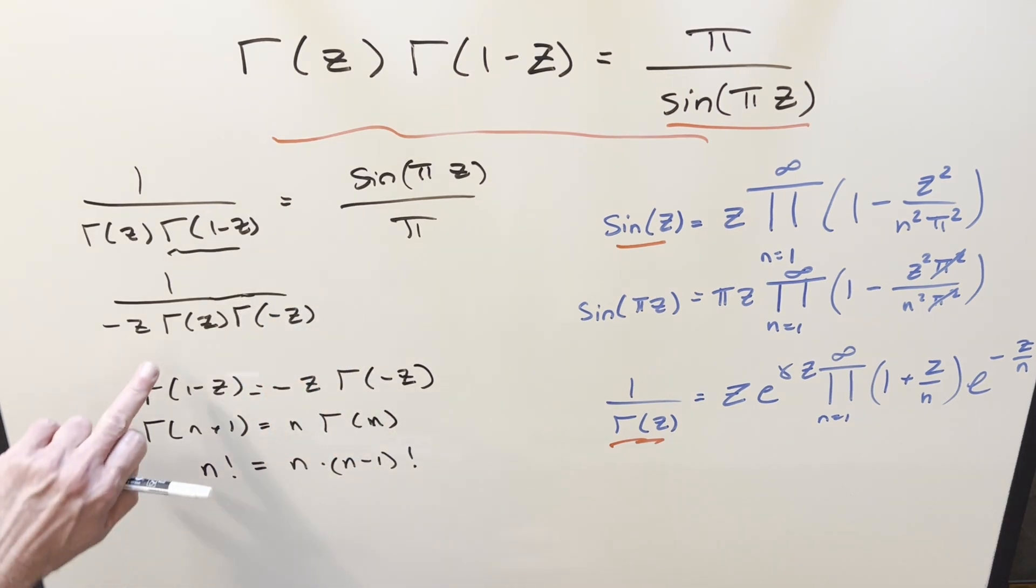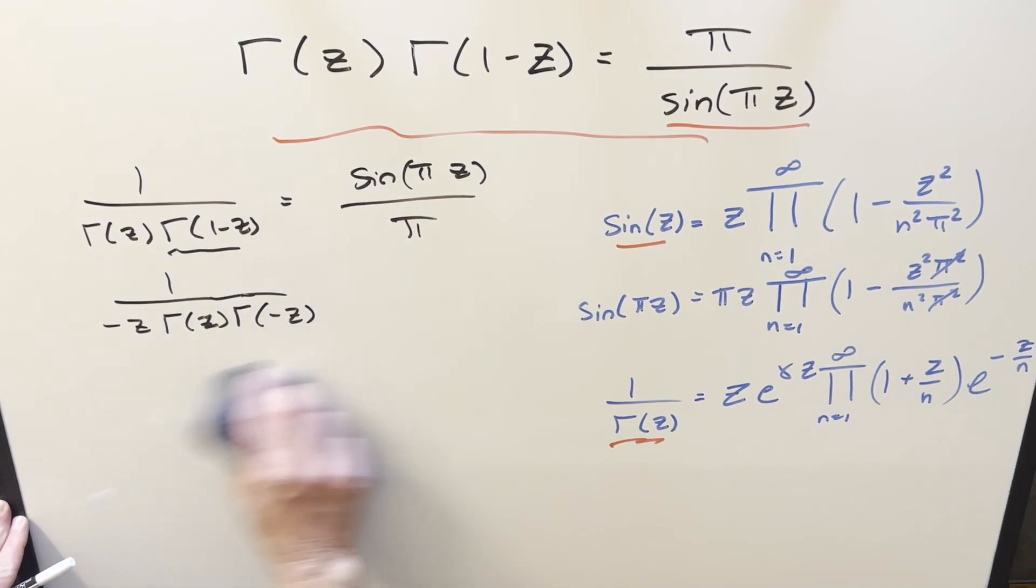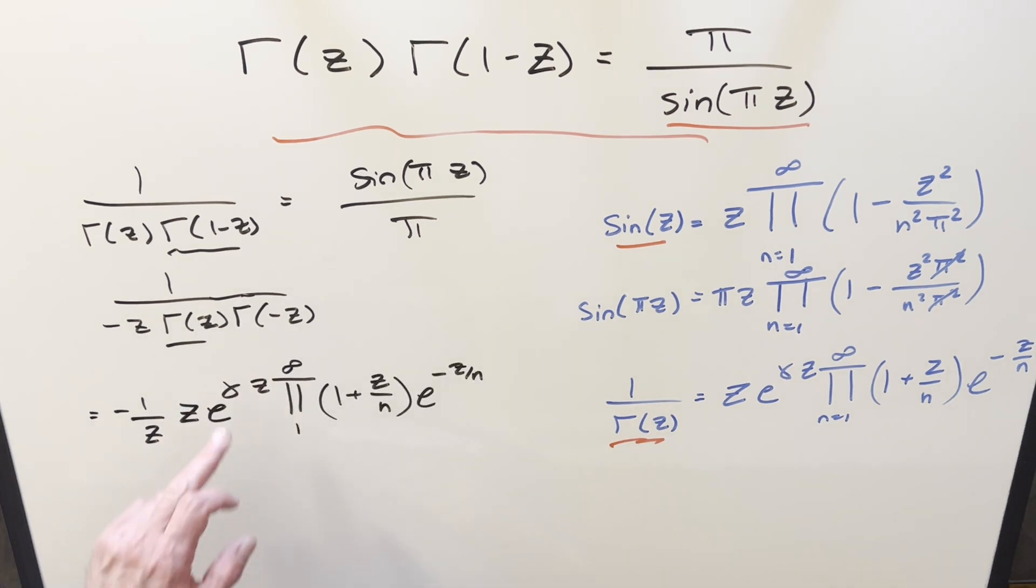And then from here, just working from the left side, we can just plug in this whole messy expression here, just substituting and everything. So what's going to happen? So first let's write the minus 1 over z all the way up front. Then for 1 over gamma z, we can just copy down this verbatim. Next, we'll do the exact same thing, but we need to plug in minus z into this.